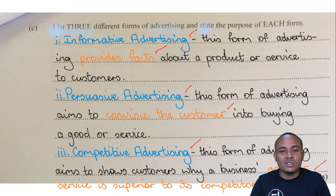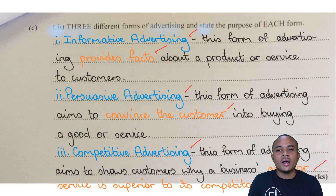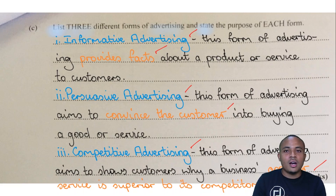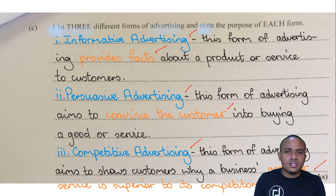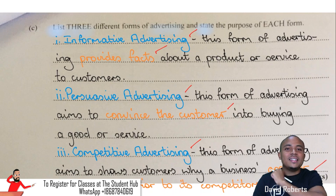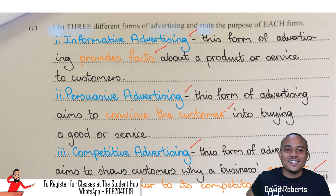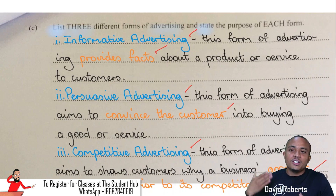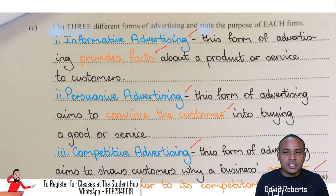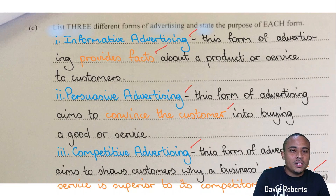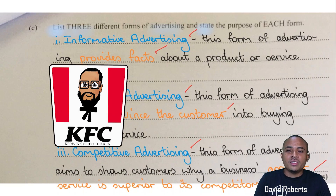There are also two other forms of advertising. Defensive advertising is where a company tries to prevent another company from taking their customers. Reminder advertising is where you remind customers that you are selling products — you might already be well-known but just want to stay top of mind.